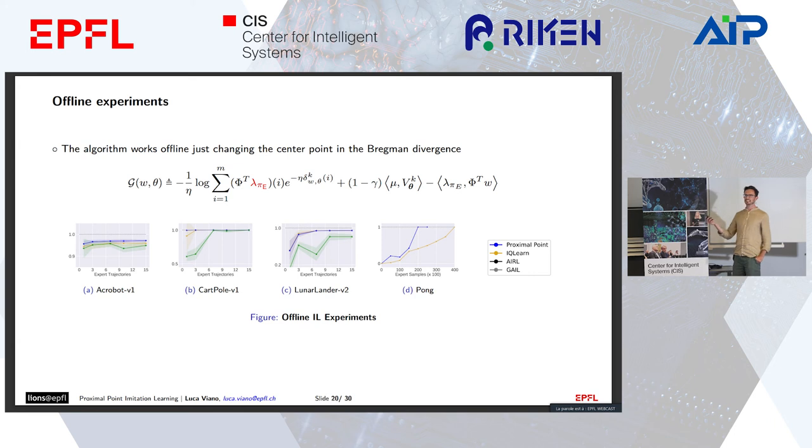We see that this variation also works well. Now in the x-axis we don't have samples from the simulator of the learner, but the number of expert trajectories we need in the dataset to achieve a good performing policy. We perform either comparably or better than IQ Learn. One is the expert performance, and Pong is an environment from the Atari benchmark with visual input that we think is quite challenging, and it's interesting that we performed well in that setting.